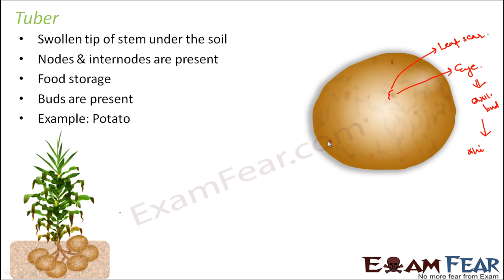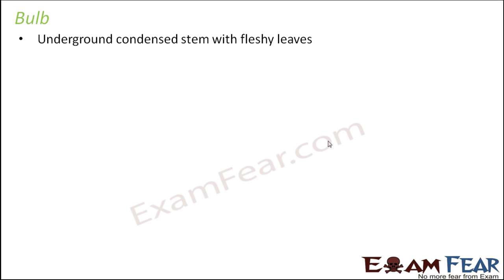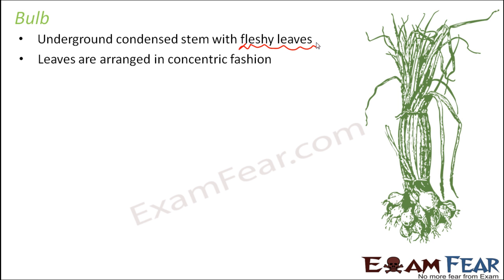The third type of underground stem is bulb. A bulb is an underground condensed stem with fleshy leaves — fleshy leaves being the unique feature. Examples include onion and garlic. The leaves are arranged in a concentric fashion, with layers one after another around a central point.